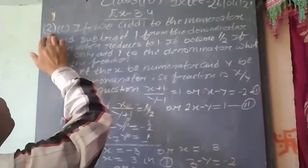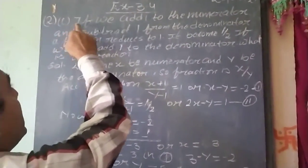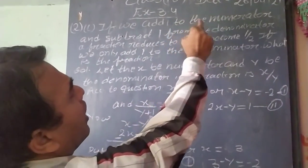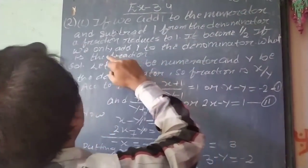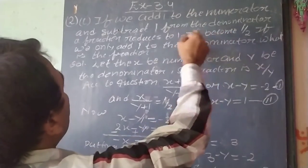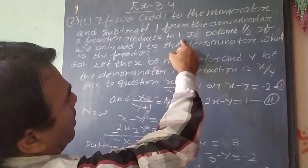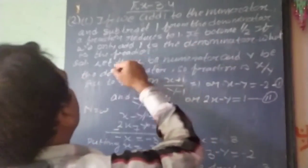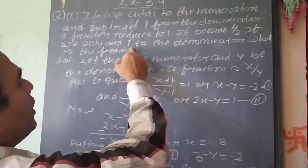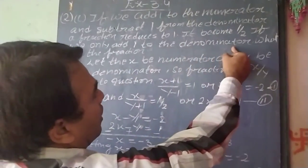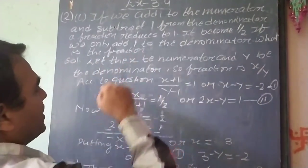Here, problem number 2, question number 1. If we add 1 to the numerator and subtract 1 from the denominator, a fraction reduced to 1, it become 1 by 2. If we only add 1 to the denominator, what is the fraction?